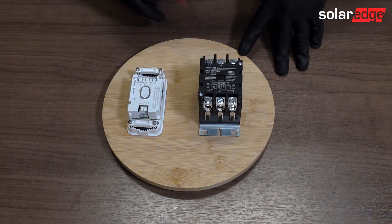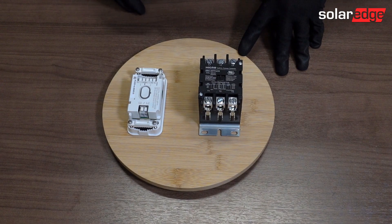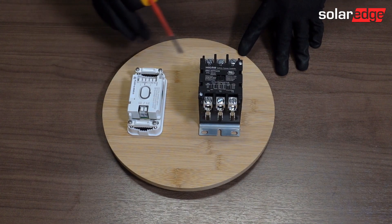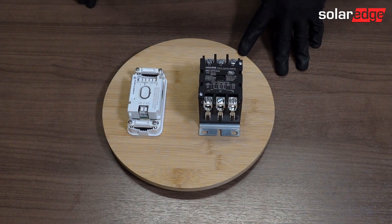For the contactor of this size and type, we can see that the supply side is line one, line two, line three, and then the load side is T1, T2, T3.